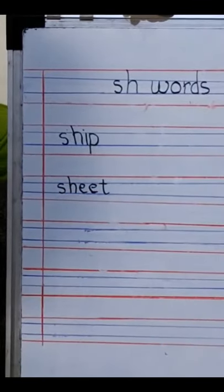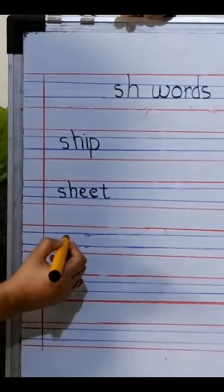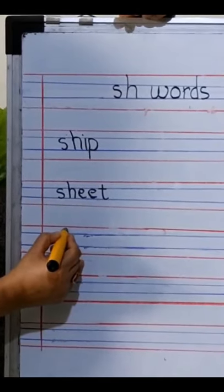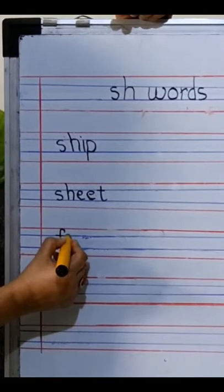The third word we are going to write is fish. What is it? Fish. Fish. Where SH comes at the end.